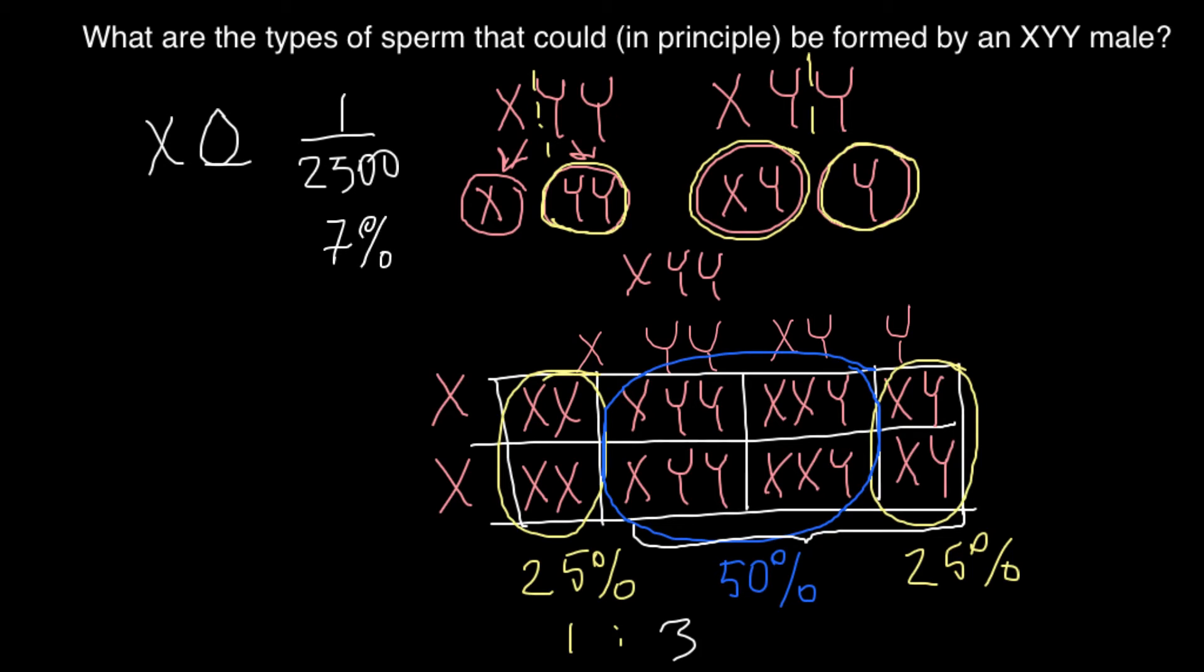When we have Klinefelter syndrome, when we have one X chromosome in females, as you see the mother nature works very efficiently and in most of the cases such pregnancies would self-abort. And that's why we have only occurrence of this genetic disorder only one per 2500 life born girls.